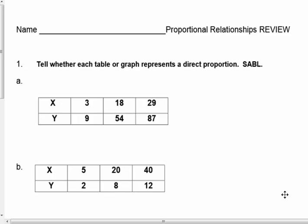Number one: tell whether each table or graph represents a direct proportion. Notice that it's a table. I want a full sentence answer here. Number one, A — it's a table. I have two options with my table to answer this question. Is this showing a proportional relationship? There are two ways I can do this. You can answer it one of the two ways; I'm going to show you both on A.